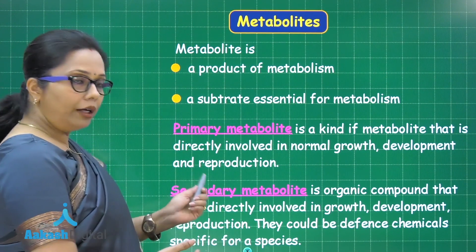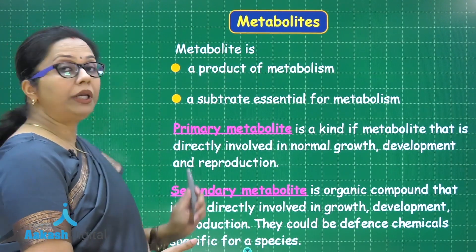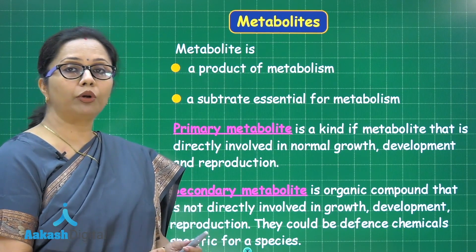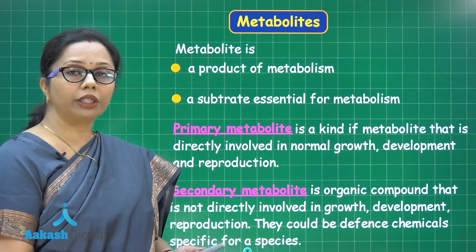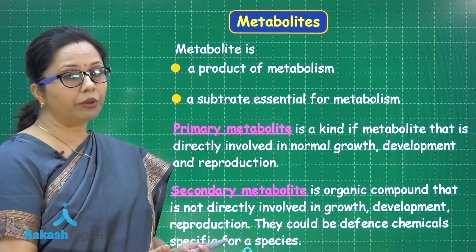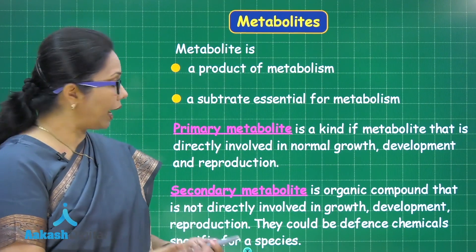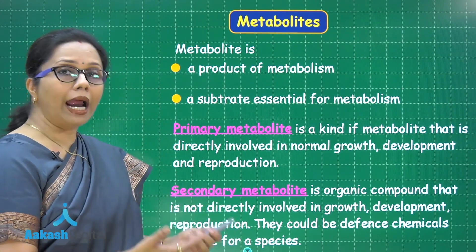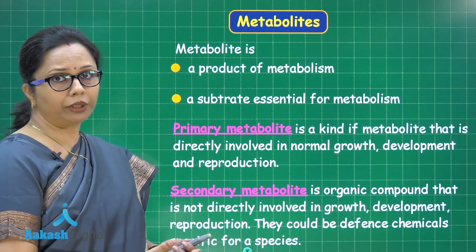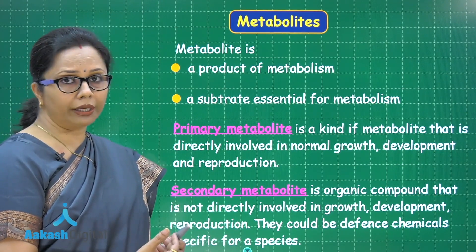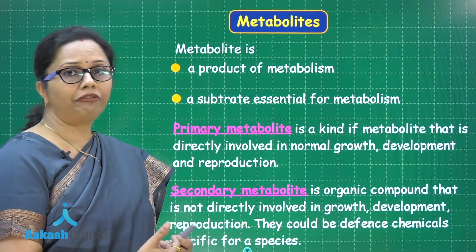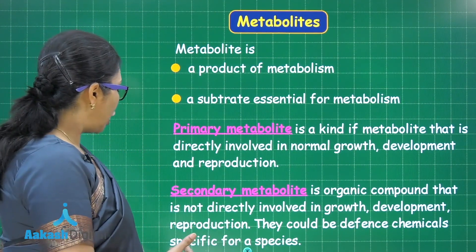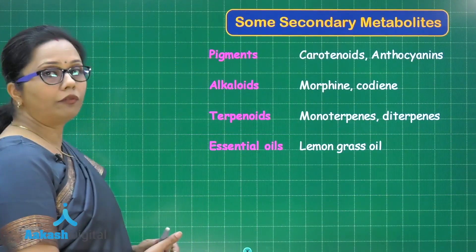A secondary metabolite is an organic compound that is not directly involved in the growth, development, and reproduction of the organism. Secondary metabolites could be defense chemicals — for example, bacteria synthesize a number of antibiotics, which are their defense chemicals against other organisms. Plants also manufacture many secondary metabolites which are stored within them, and we have found certain industrial uses for those secondary metabolites.